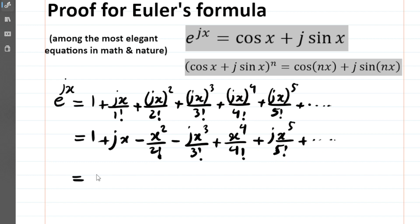Let's keep the real and imaginary parts separate. The real part is: 1 - x^2/2! + x^4/4! - x^6/6! + ..., and this goes on forever. That's the real part.